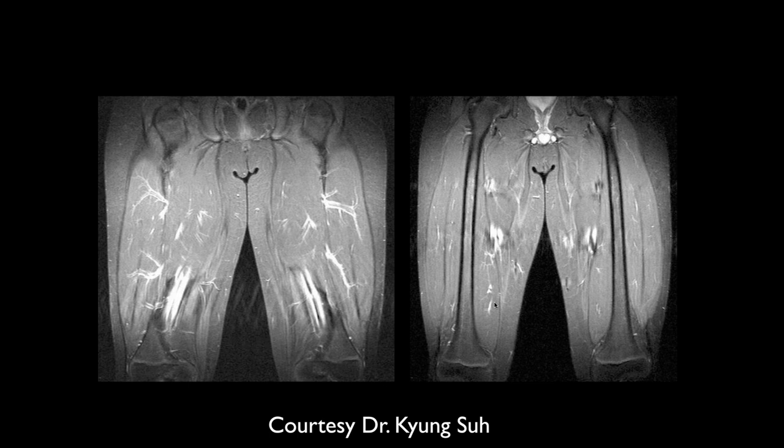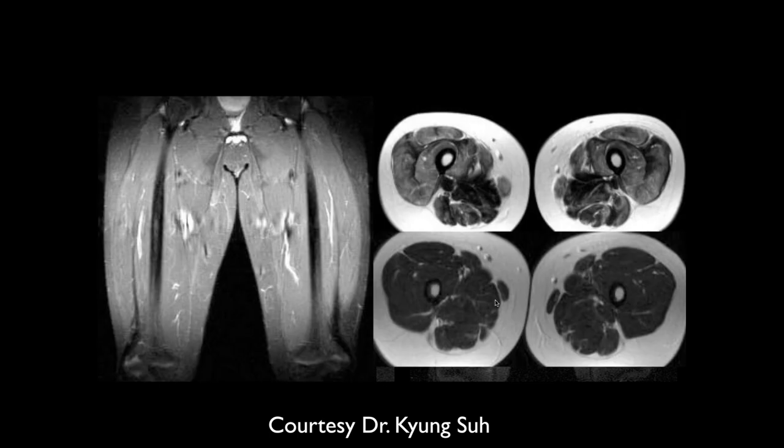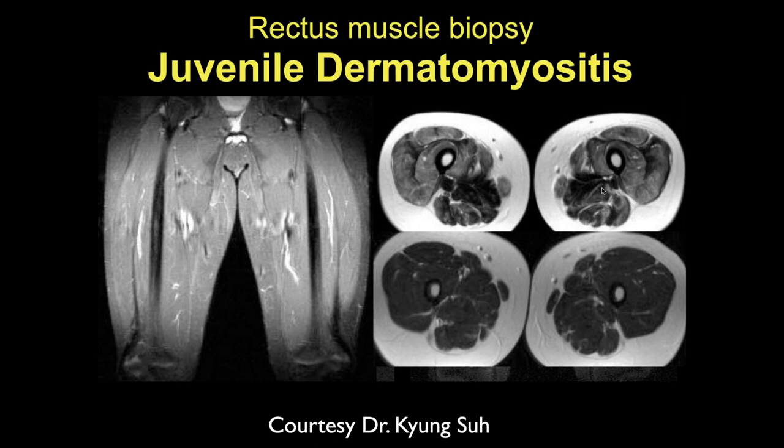Two coronal fluid-sensitive fat-saturation sequences. On coronal images the findings are subtle, but on axial fluid-sensitive sequences there is diffuse muscular edema with some sparing of a few adductors — concerning for myositis, specifically juvenile dermatomyositis. This pattern is usually more obvious on coronal STIR images.